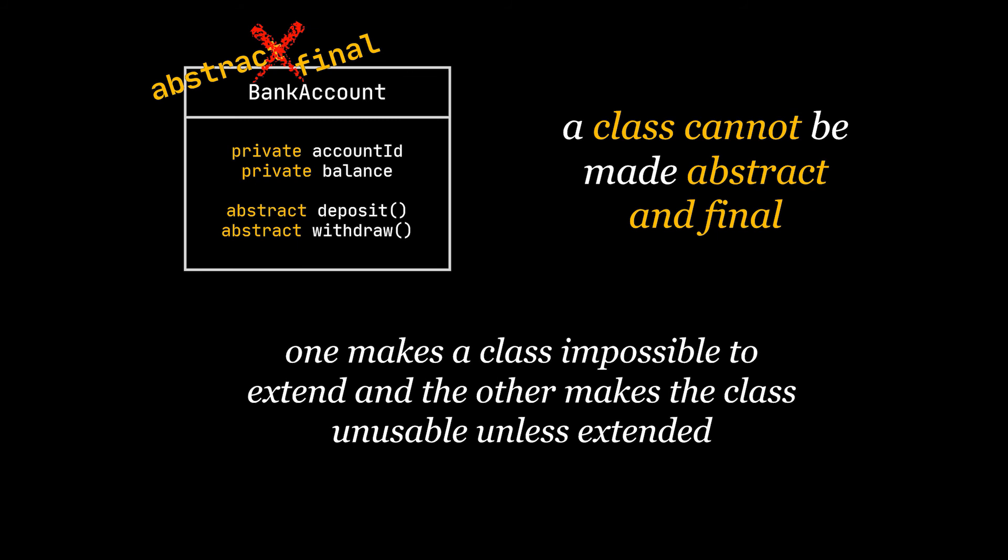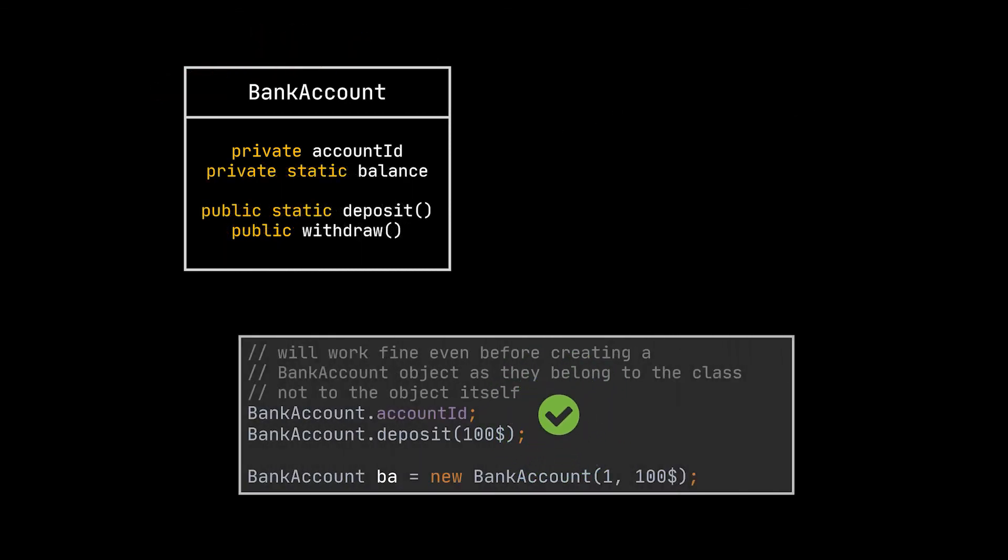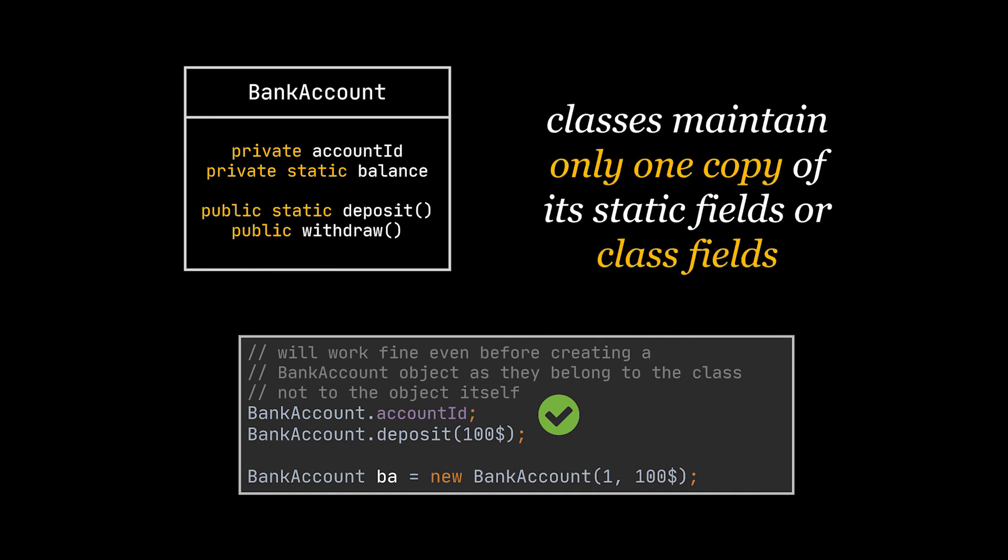We are going to conclude this Java keywords video with the static keyword. This keyword is used to declare a field, a method, or an inner class as class property. What I mean by that is once a field is declared as static, this field will belong to the class and not the objects based on that class, and this field will be accessible before any object is created using this class. Classes maintain only one copy of these static fields or class fields and do not create multiple instances of them.